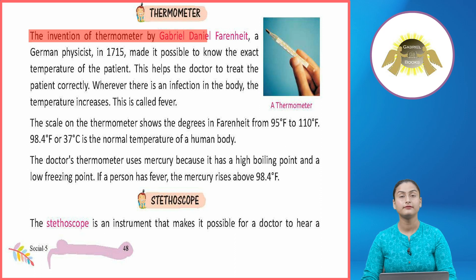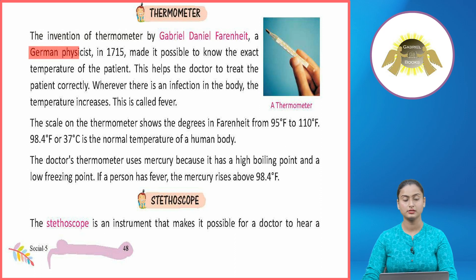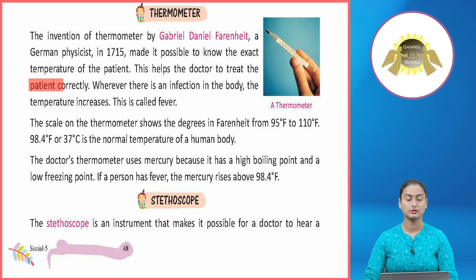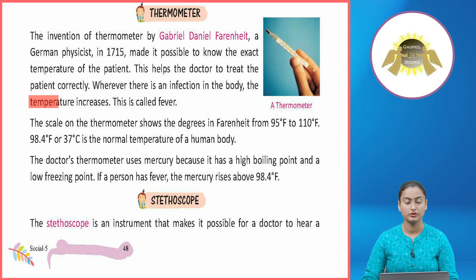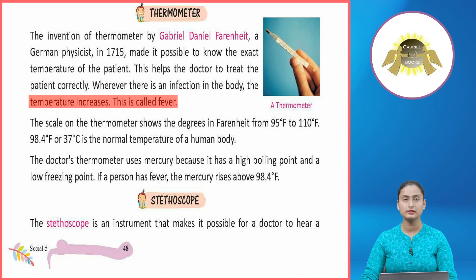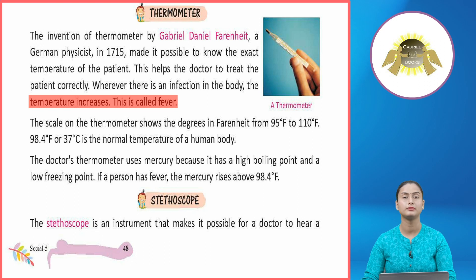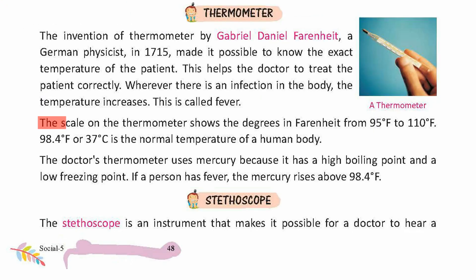Thermometer: The invention of the thermometer by Gabriel Daniel Fahrenheit, a German physicist, in 1715 made it possible to know the exact temperature of the patient. This helps the doctor to treat the patient correctly. Wherever there is an infection in the body, the temperature increases — this is called fever. Gabriel Daniel Fahrenheit ne 1715 mein thermometer ki discovery ki, jis ki madad se body ka temperature pata laga sakte hain.